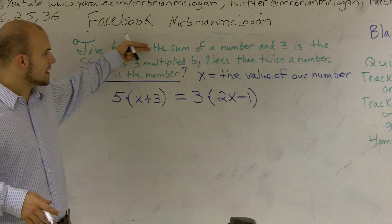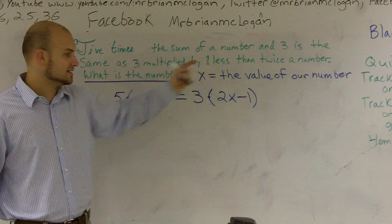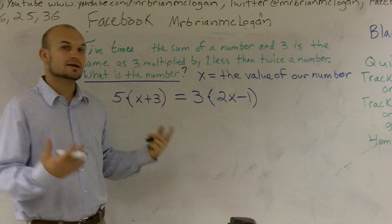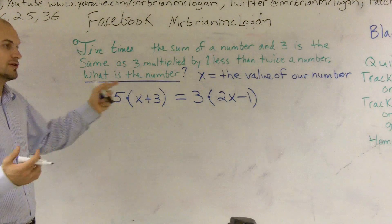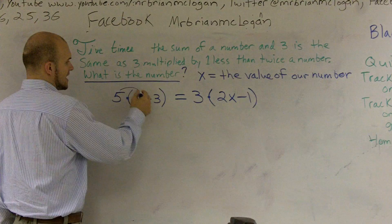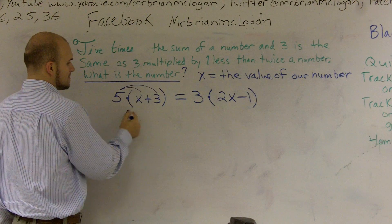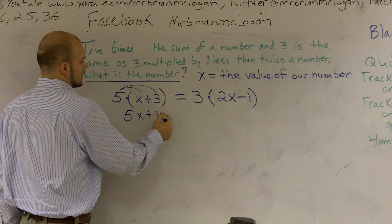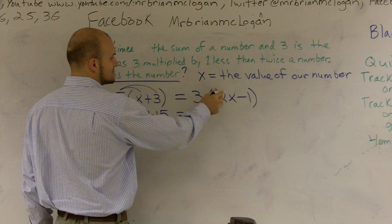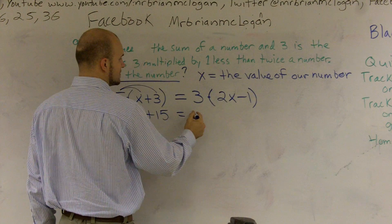So I went from a word problem, I got a variable and defined it, and then I created an equation. Now what I'm going to do is just use distributive property and solve. So I'll do 5 times x, 5 times 3 equals 3 times 2x, 3 times negative 1. That gives me 5x + 15 = 6x - 3.